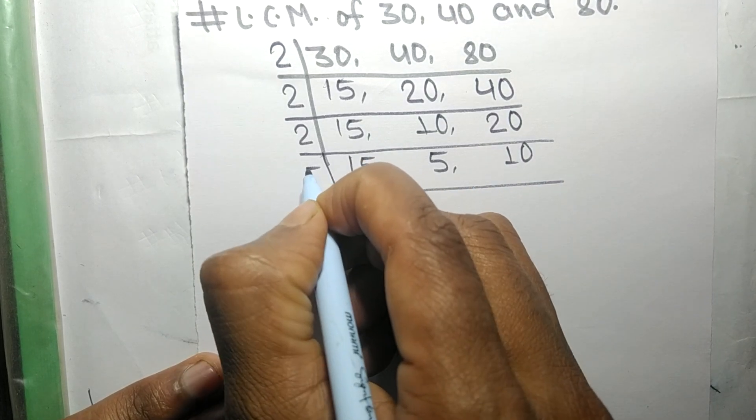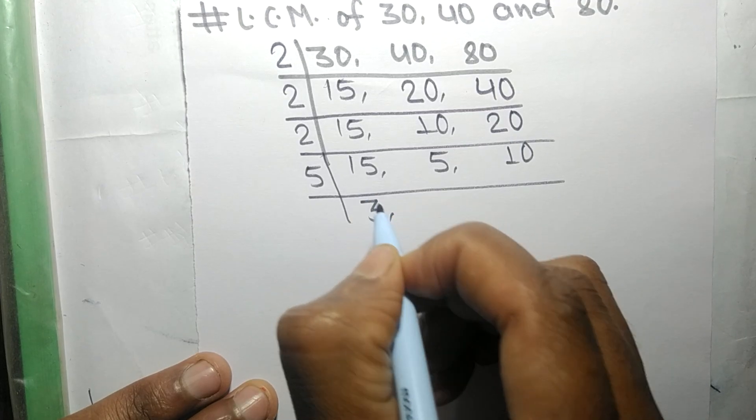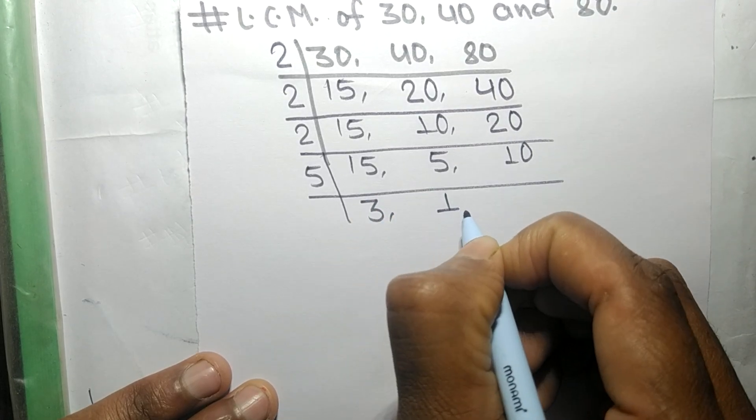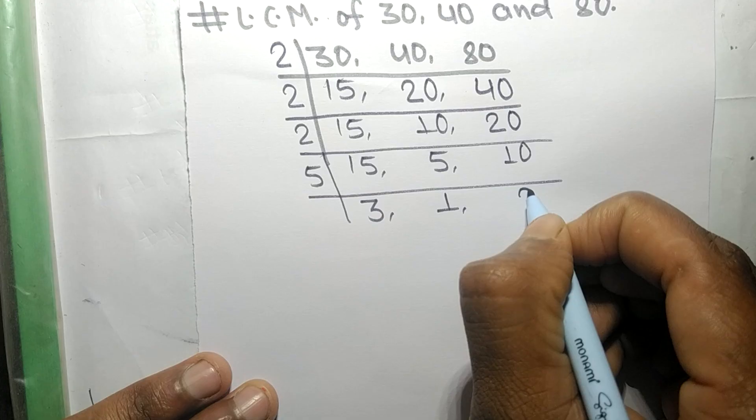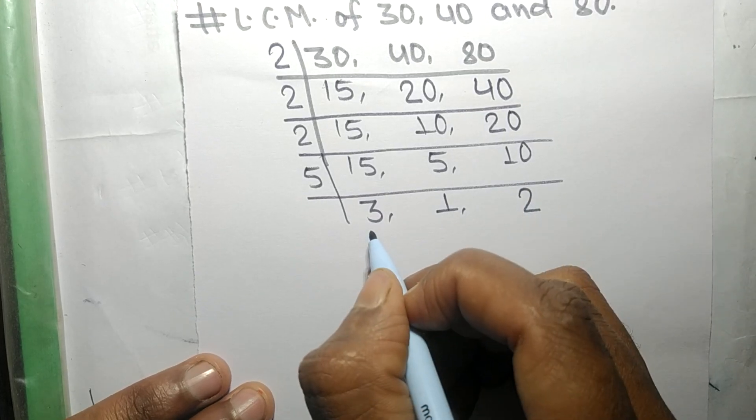Again these all numbers are exactly divisible by 5. So 5 times 3 equals 15, 5 times 1 equals 5, 5 times 2 equals 10. Now the numbers 3, 1 and 2 are not exactly divisible by the same number.